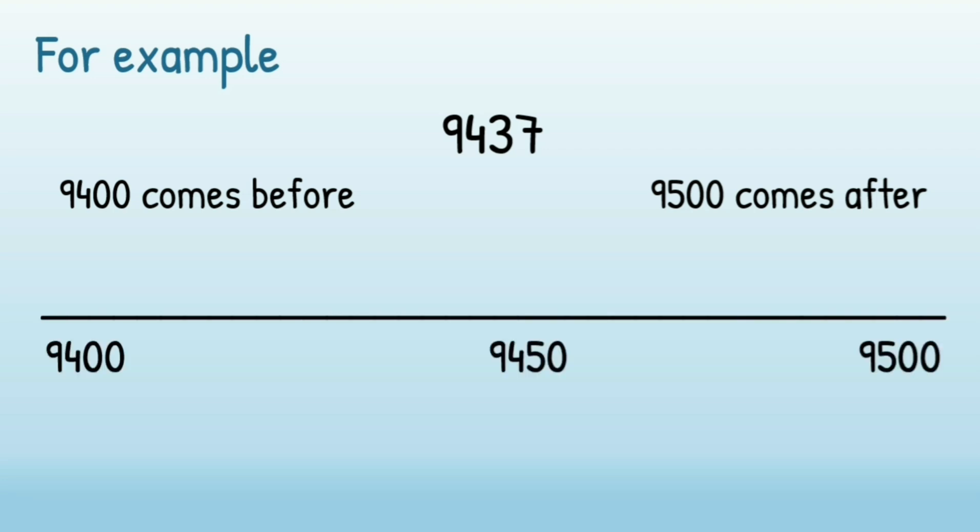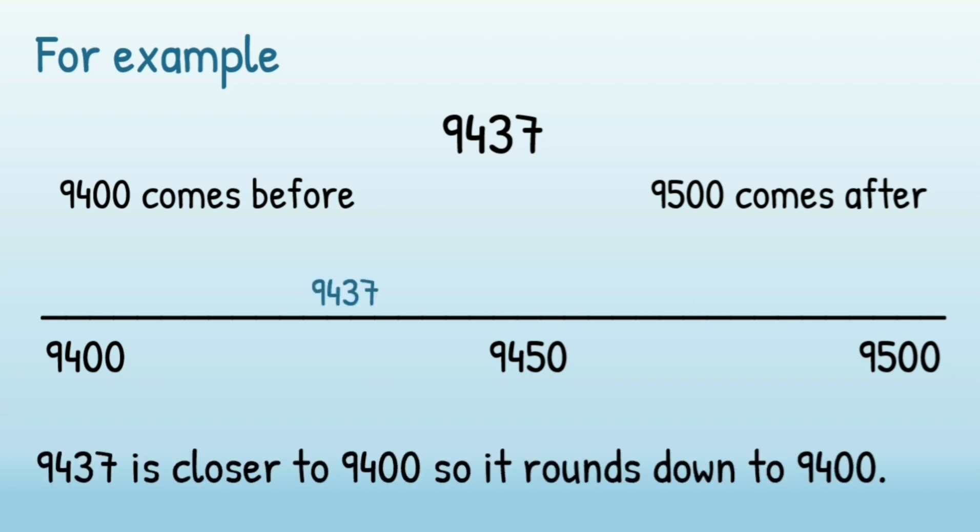We've got 9,450 in the middle. Now 9,437 would go before 9,450, so it's closer to 9,400. So 9,437 rounds down to 9,400 as the nearest 100.